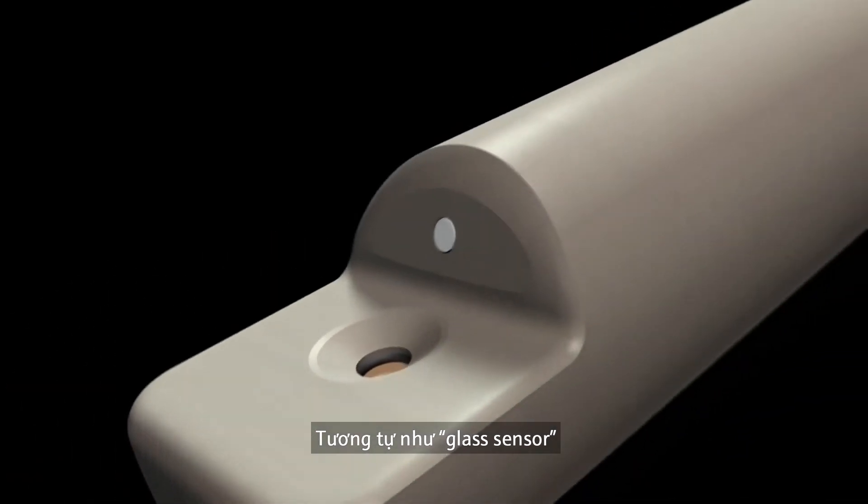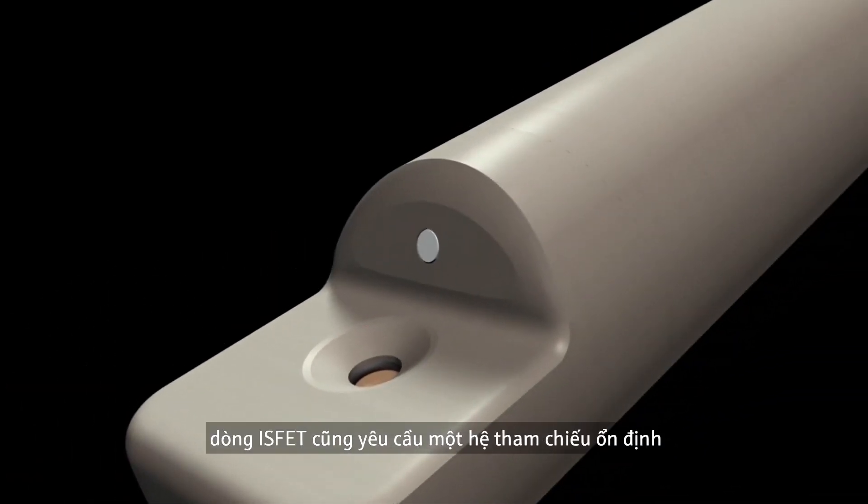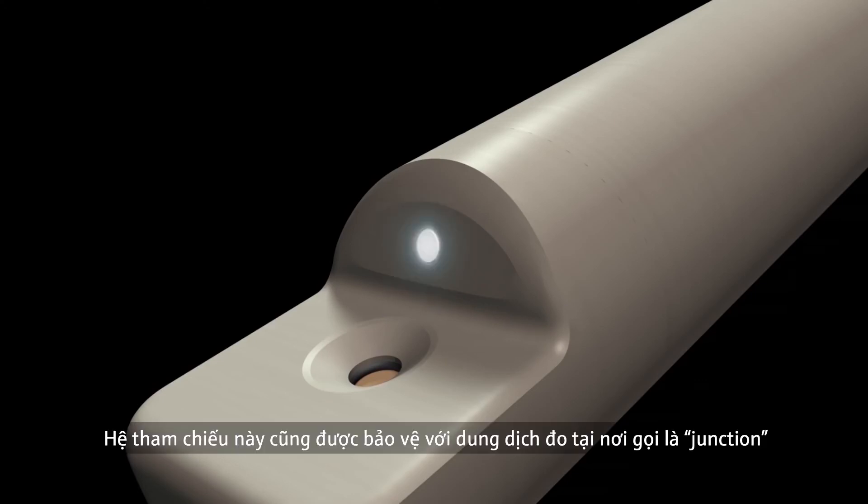Just like the glass sensors, the ISFET sensor also needs a stable reference potential. The potential that forms at the ISFET can then accurately be measured against it. The reference system is also protected from the measured solution by a so-called junction.